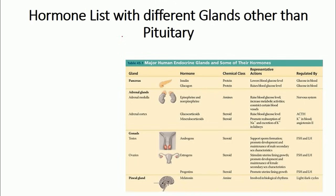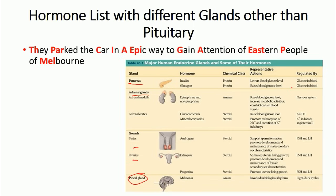Apart from the pituitary, all the other glands — pancreas, adrenal glands, testis, ovaries, pineal glands — secrete many different types of hormones with different chemical properties and functions. It's quite difficult to remember the whole table, so here's a mnemonic: the sentence 'They parked the car in an epic way to gain attention of eastern people of Melbourne' gives you the names of all the hormones in sequential order.